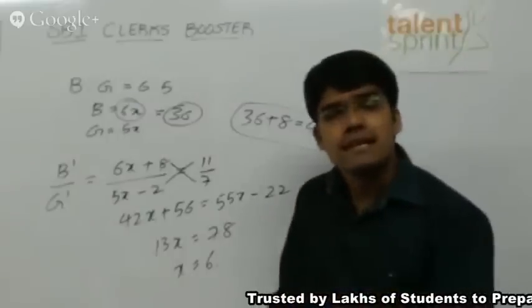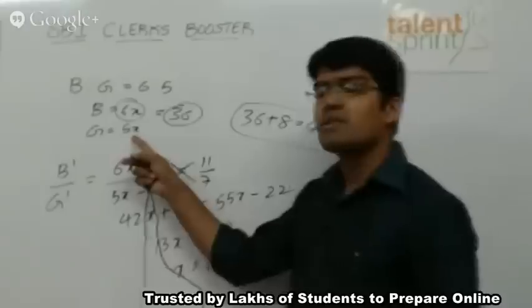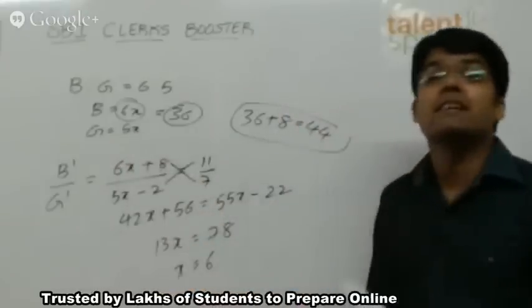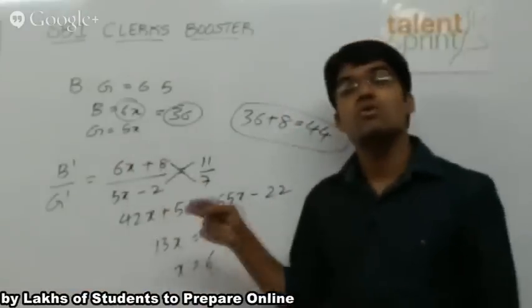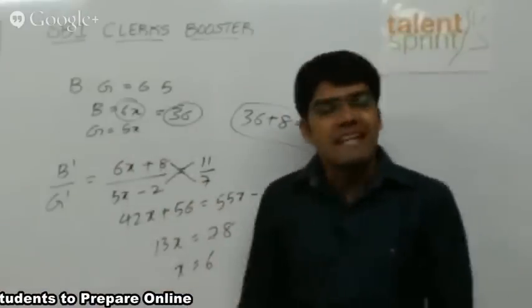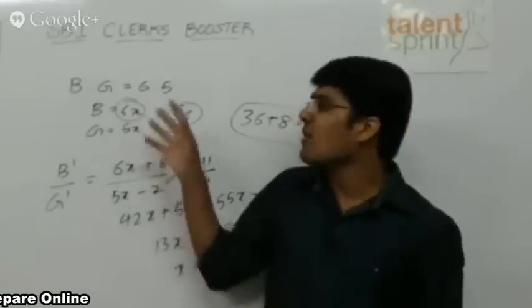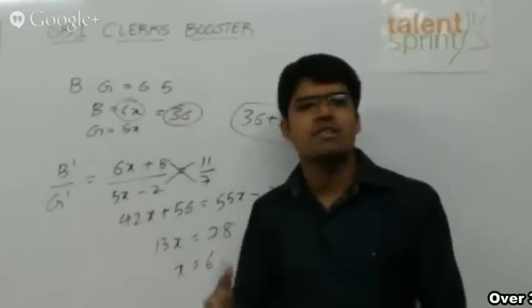Likewise the question may say how many girls are there in the class now? Originally the number of girls was 5x. So 5 into 6, 30. 30 minus 2 because 2 girls have left. So 30 minus 2, 28 is the answer.